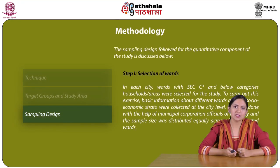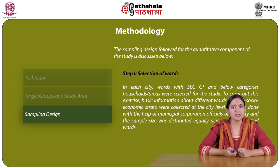Looking at the sampling design, the quantitative component first involved the selection of wards in each city. Wards with Section C and below categorized households or areas were selected for the study. Basic information about different wards and the socio-economic strata were collected at the city level with the help of municipal corporation officials of each city, and the sample size was distributed equally across all the selected wards.